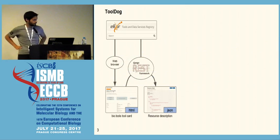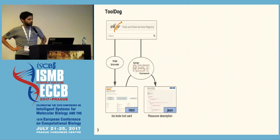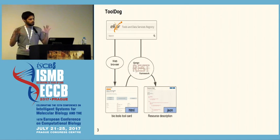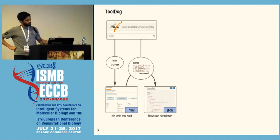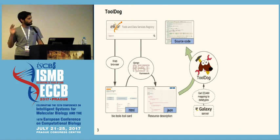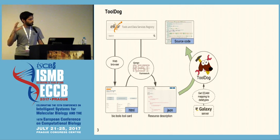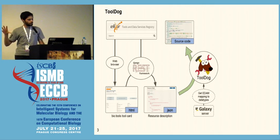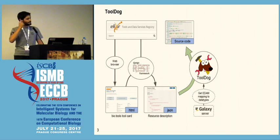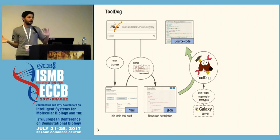Tool Dog is a Python 3 tool. First, you get the information from bio.tools in JSON format and load it into an object model within Tool Dog. In the meantime, the source code is downloaded for further analysis. There is also an extra step for Galaxy XML generation, which makes the link between EDAM and the Galaxy data types.